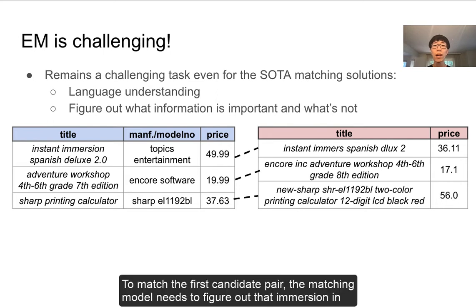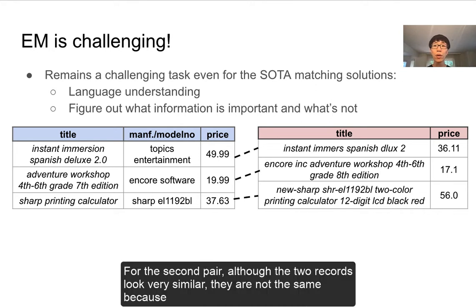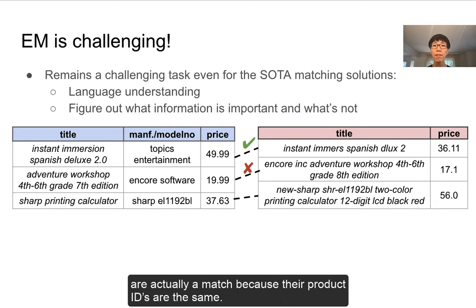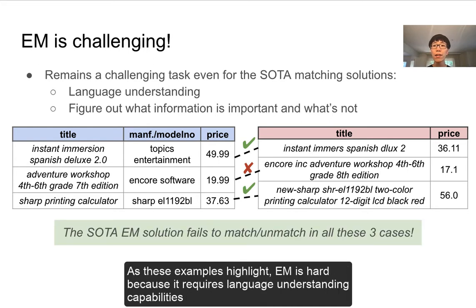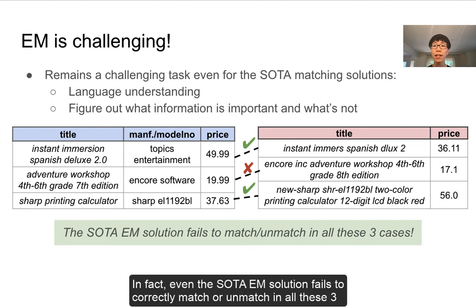Let's look at some examples. To match the first candidate pair, the matching method needs to figure out that "immersion" on the left is the same as "immersed" on the right, and "Deluxe 2.0" is the same as "Deluxe 2" on the right. For the second pair, although the two records look very similar, they are not the same because they are software of different editions. For the last pair, although they look very different by the names and prices, they are actually a good match because their product IDs are the same. EM is hard because it requires language understanding capabilities and figuring out what information is important for matching. Even the state-of-the-art entity matching solution failed to correctly match or unmatch all three cases.